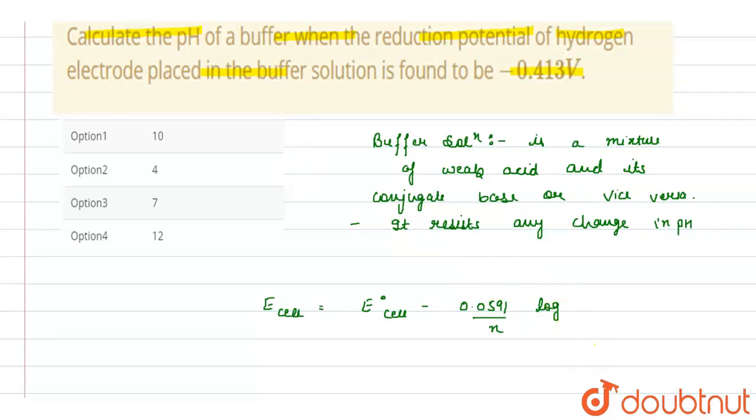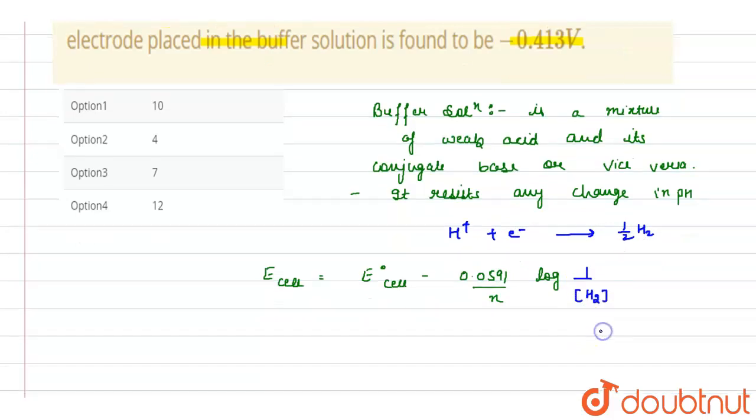But here the reaction complete reaction is hydrogen gain one electron gets converted into hydrogen gas, so this will be one upon concentration of H positive ion because this is hydrogen gas. That's why we will take its concentration one upon H positive ion.